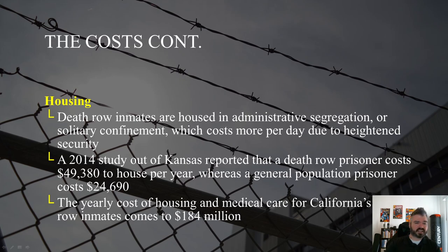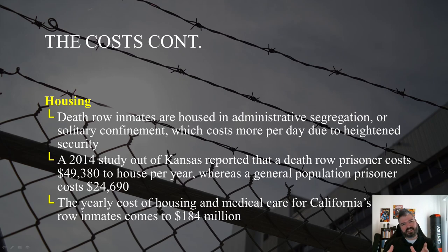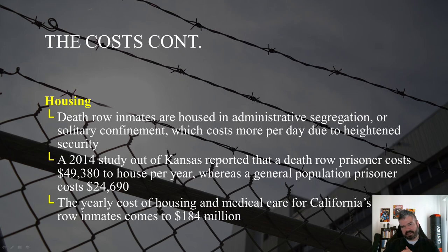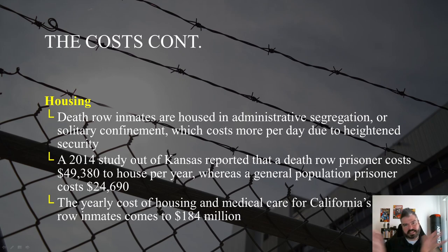Finally, housing: death row inmates are housed in administrative segregation — solitary confinement — which costs more per day due to heightened security. A 2014 study done in Kansas reported that death row prisoners cost about $49,380 to house per year, whereas a general population prisoner costs less than half that at $24,690. The yearly cost of housing and medical care for California's death row inmates is $184 million, though costs vary by state.